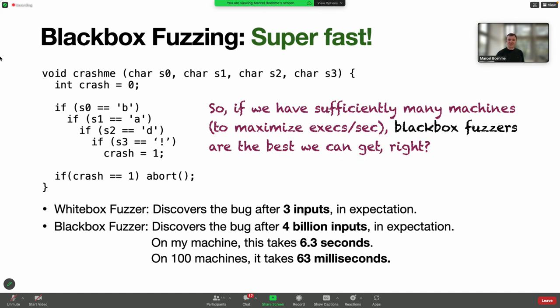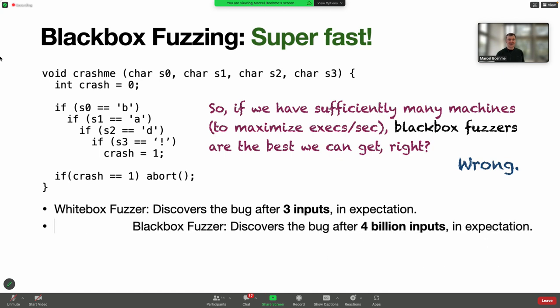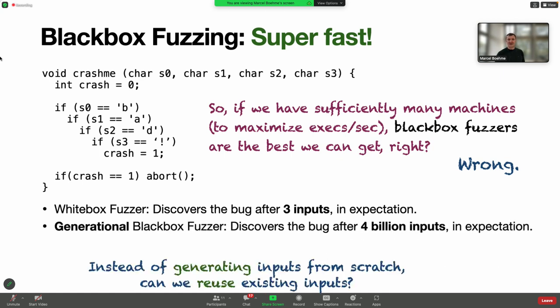Is black box fuzzing the best we can do? The answer is we can do even better. What I presented was a generational black box fuzzer, generating values for each character. But instead of generating inputs from scratch, maybe we can reuse existing inputs. This is called mutational black box fuzzing.